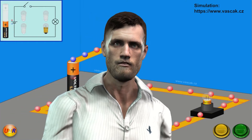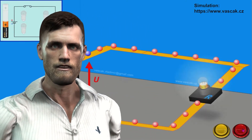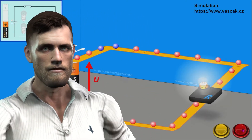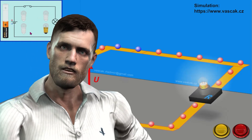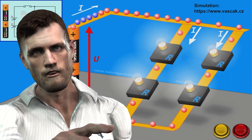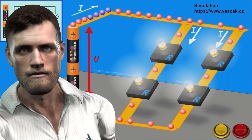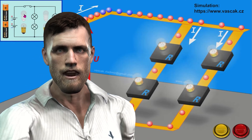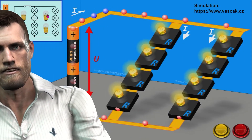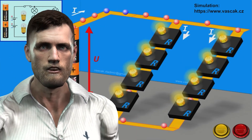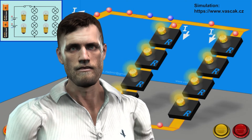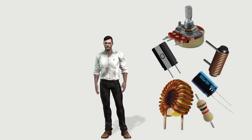When we apply a voltage to an installation or electronic circuit, normally, unless there is a short circuit, the current is limited to a certain value, and if the voltage varies, the current usually varies too. In this way we can establish a relationship between voltage and current that will depend on the type of load or component.